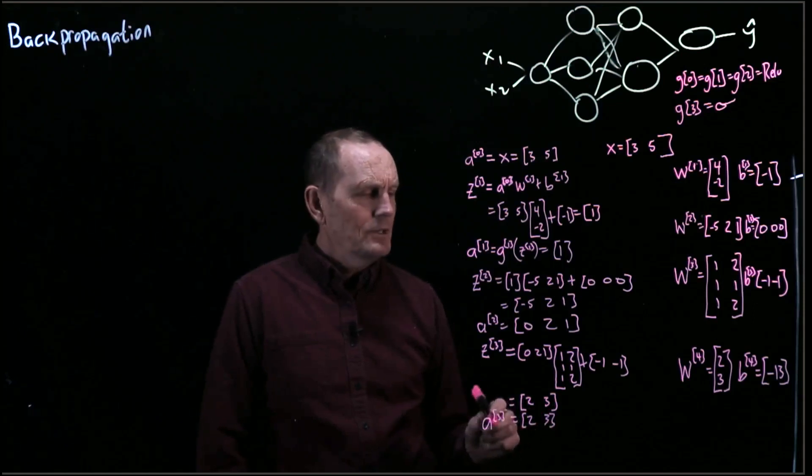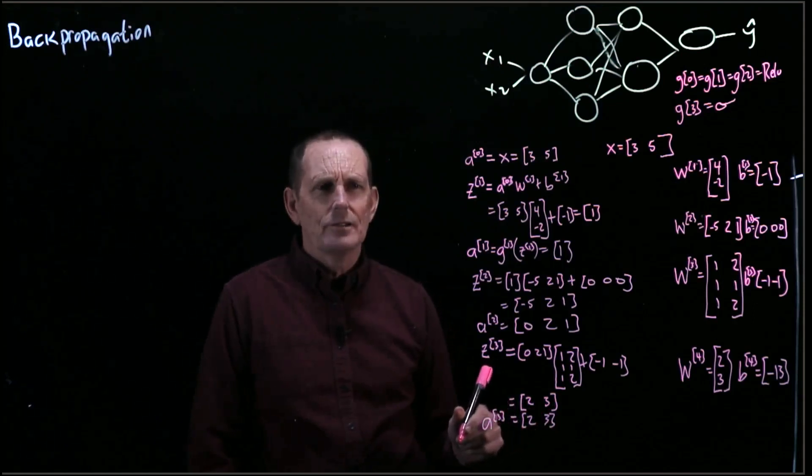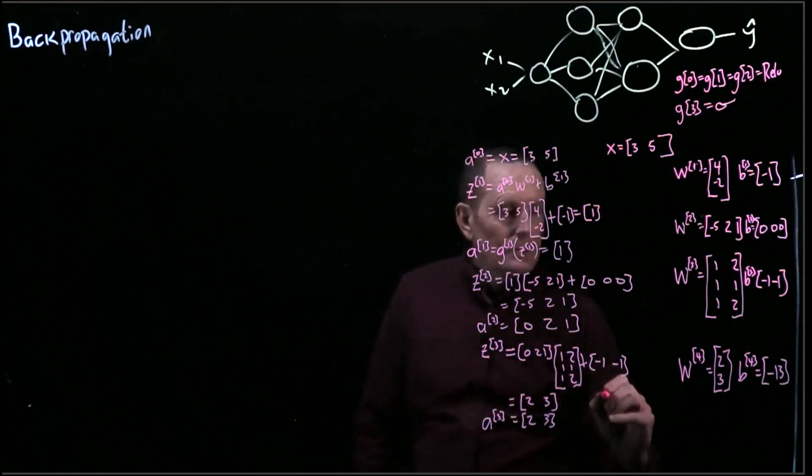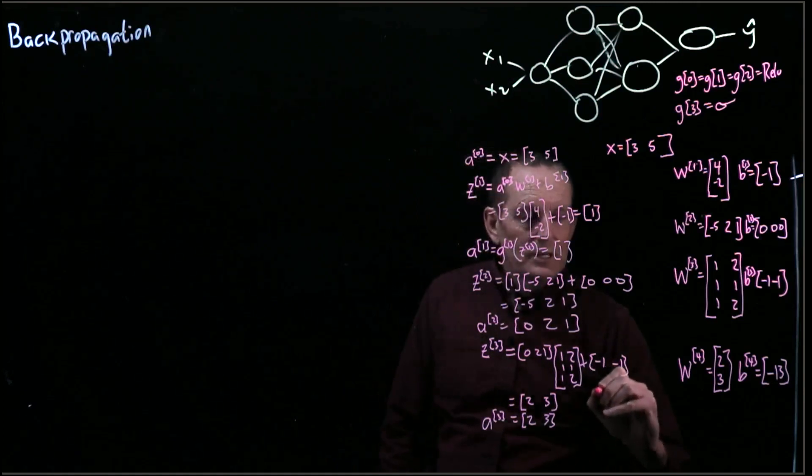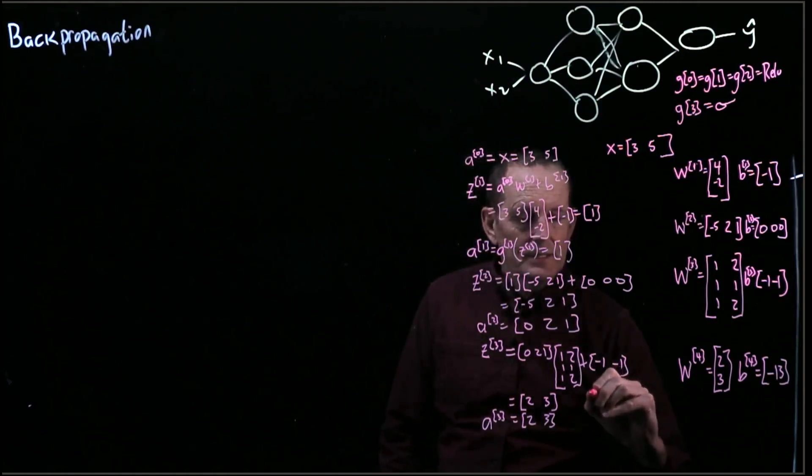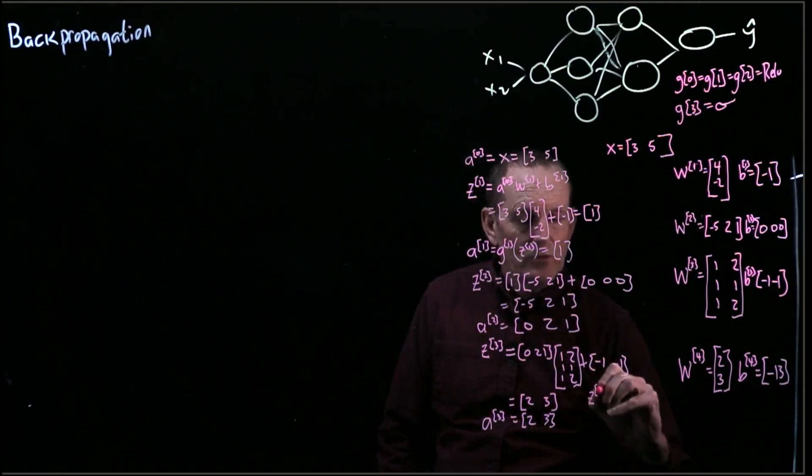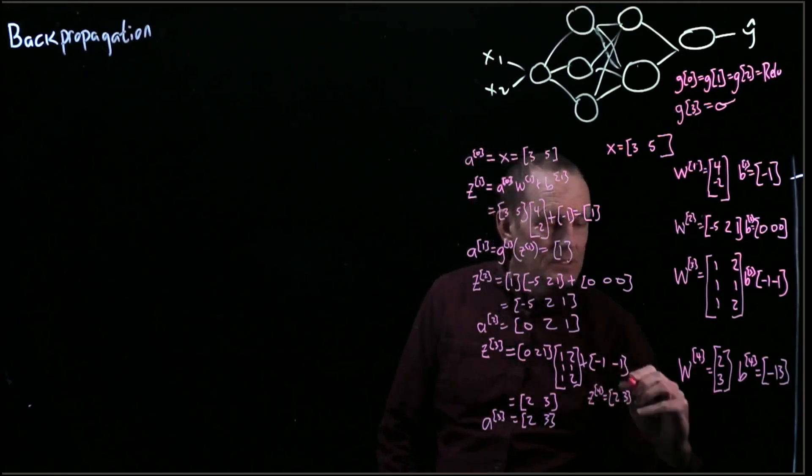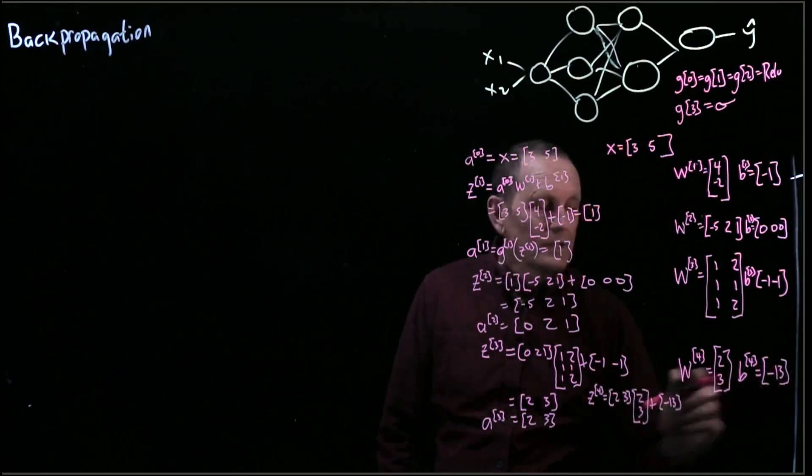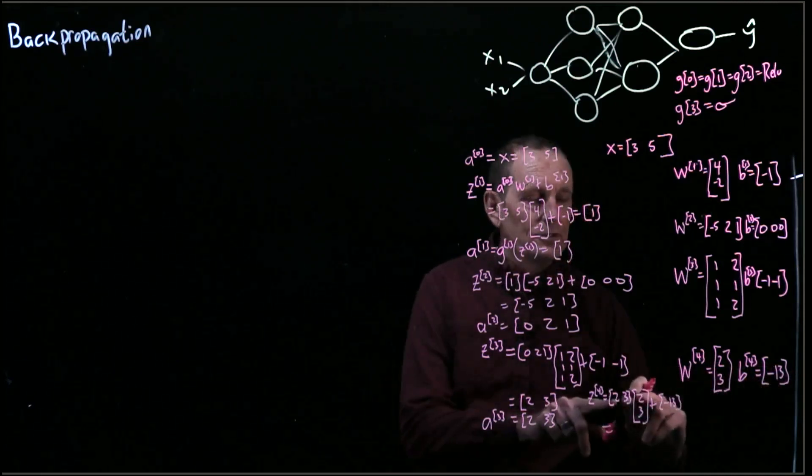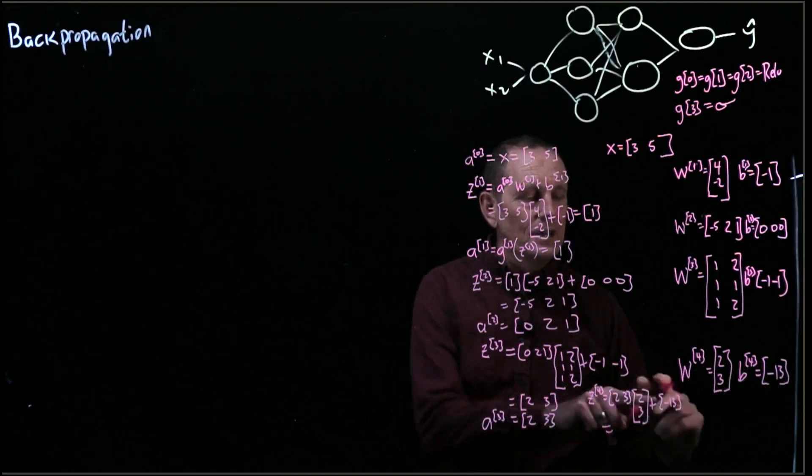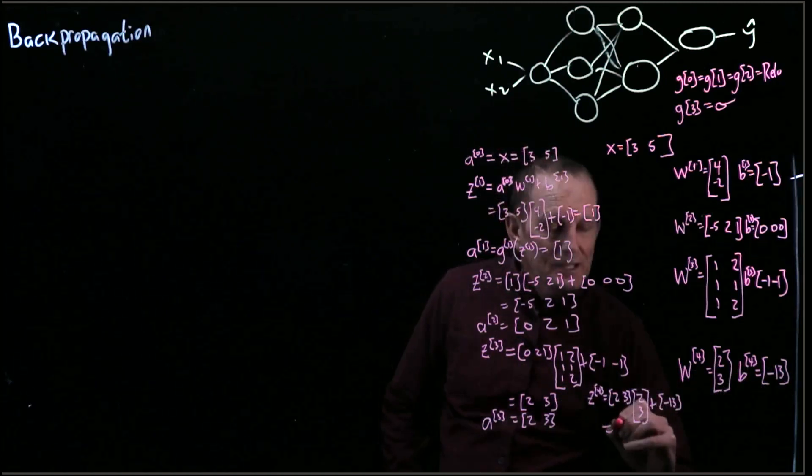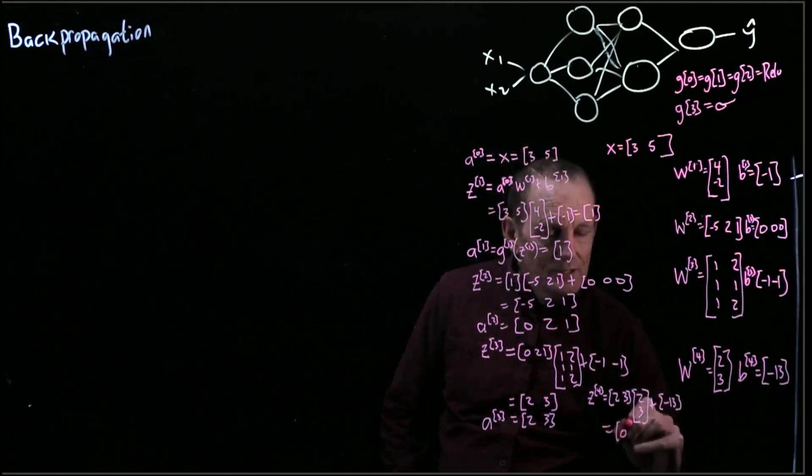And then finally, our last one, we have, we'll just put it down here, Z super 4 equals this array times this one. Plus the negative 13, and that equals 2 times 2 is 4, plus 3 times 3 is 9, so that's 13 plus negative 13 equals 0.